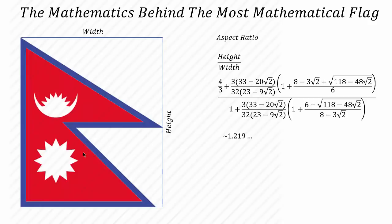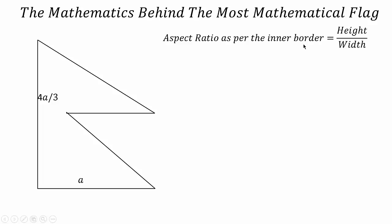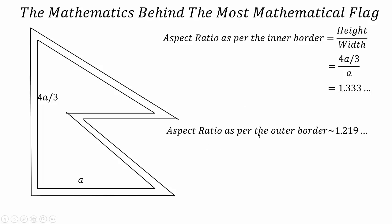The flag has an inner border colored in red and an outer border in blue. Without considering the outer border, the aspect ratio is very easy to calculate. If we consider this length as 'a', according to the steps involved in construction of the flag, we can get the aspect ratio as height to width, which is 4a/3 divided by a, that is 1.333. The designer chose the ratio 4 by 3 because it symbolizes eternity in Nepalese culture. But when the border is added, the aspect ratio becomes approximately 1.219, which is not a rational number.